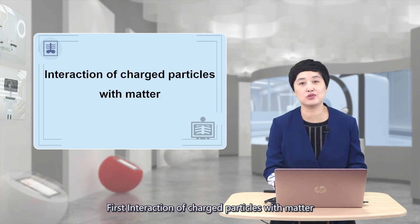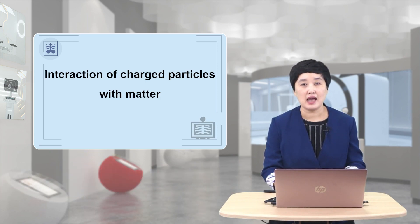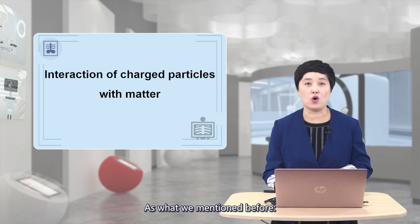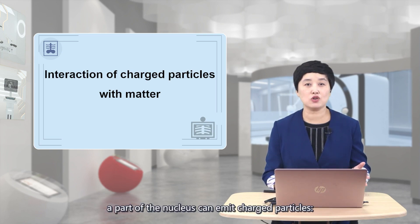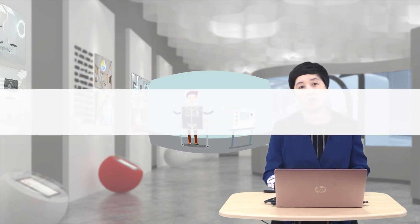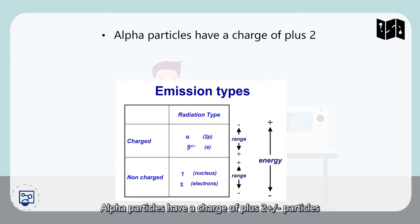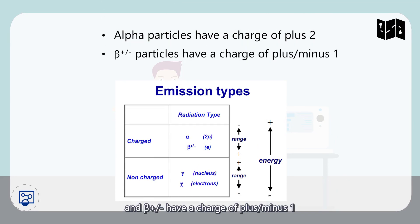As we have mentioned before, the process of radioactive decay, a part of the nucleus can emit charged particles. For example, alpha particles have a charge of plus 2, and beta-minus particles have a charge of minus 1.